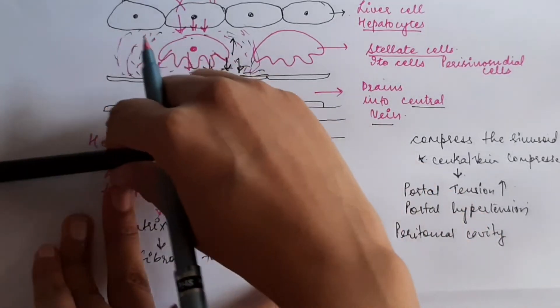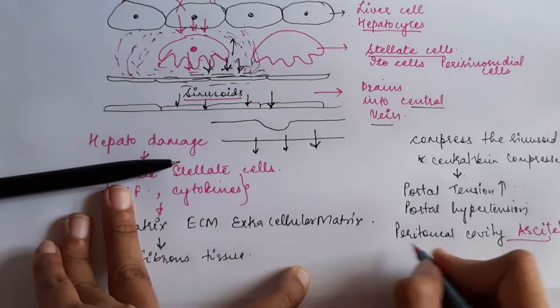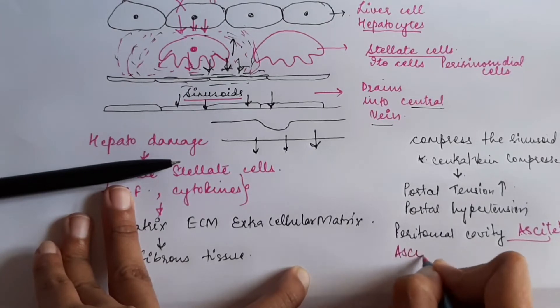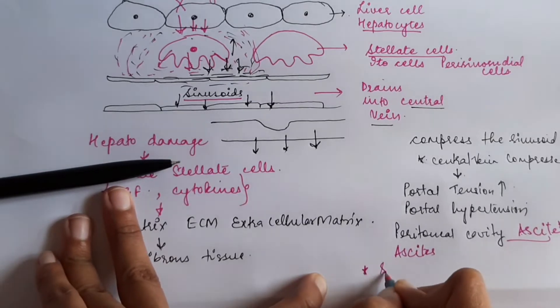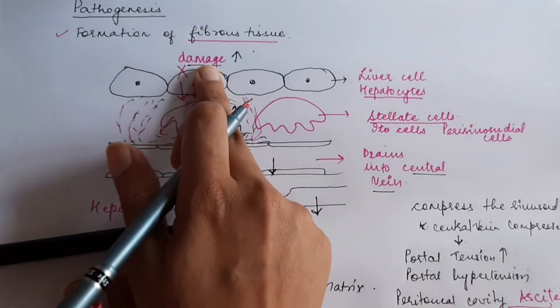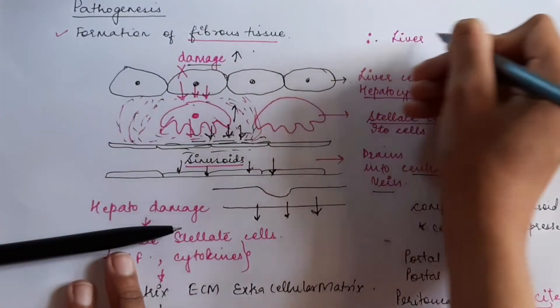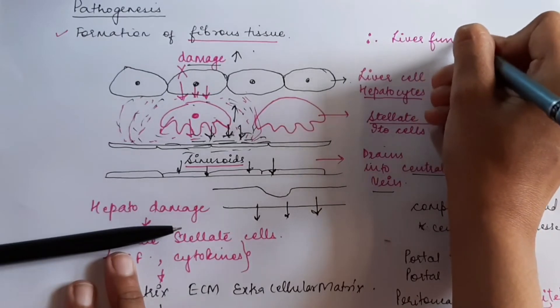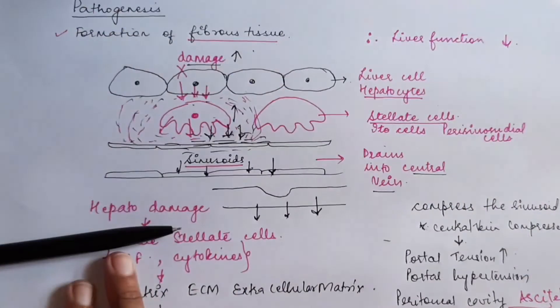This fluid will cause a condition known as ascites. The size of the spleen might increase, so it can cause splenomegaly. As the liver is damaging, the liver function will be decreased. So, all this is in the pathogenesis.